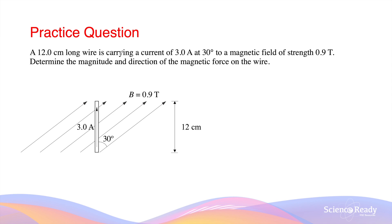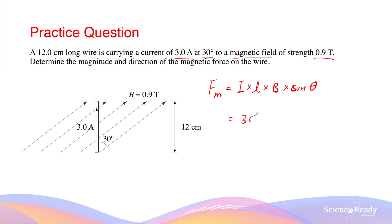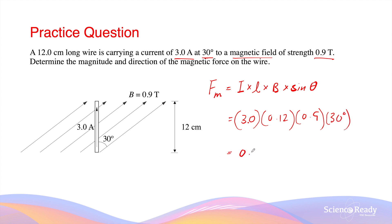We have a 12-centimetre long wire carrying a current of 3 amperes at 30 degrees relative to the magnetic field, and the magnetic field has a strength of 0.9 tesla. Determine the magnitude and direction of the magnetic force acting on the wire. This is an example of the Motor Effect, because we have a conductor carrying current placed inside an external magnetic field. The magnitude of this force can be worked out using F = ILB sinθ. The current is 3 amperes, the length of the conductor inside the magnetic field is 0.12 metres, B is 0.9 teslas, and θ is 30 degrees. This gives a magnitude of force of 0.162 newtons.